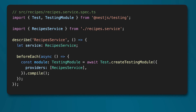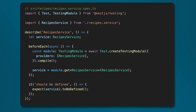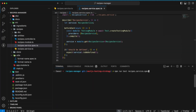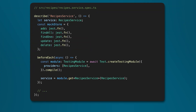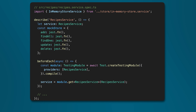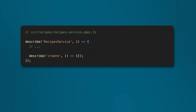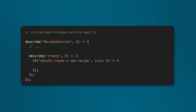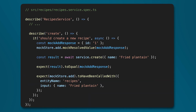After that, you can access a recipes service instance created by the testing module using the module.get function. But if you add a test to check that the service has been instantiated properly, you'll get an error because you haven't provided all the dependencies needed for the recipes service. To fix that, you can create a mock store object and provide the mock as a value for the in-memory store service. You could do the exact same thing if you have a real database or any other type of dependency. This is a very powerful pattern because you can have full control over what's injected in the class, you can mock the output of the dependencies.